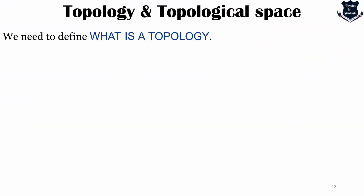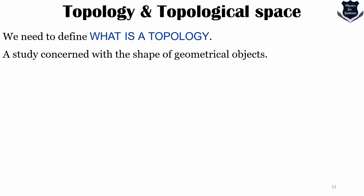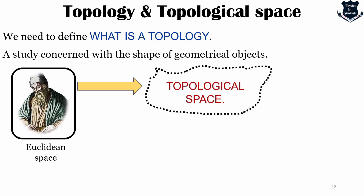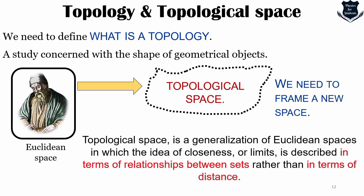We need to define what topology is. In general, it is called a study concerned with the shape of geometrical objects. From Euclidean space we are moving into topological space because we need to frame a new space and a new set of rules as these geometrical, deformed, or different types of objects come into play. Topological space is a generalization of Euclidean space in which the idea of closeness and limits is described in terms of relationships between sets rather than in terms of distance.